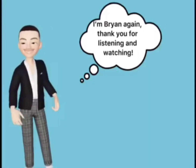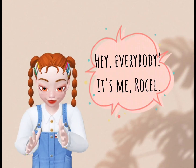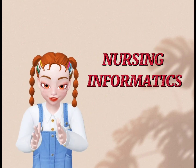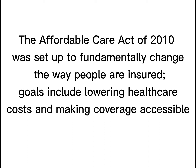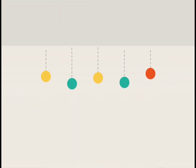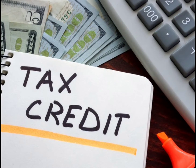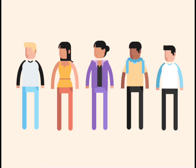Thank you for listening and watching. Hey everybody, it's me, Roselle. Let's talk about four more laws that guide nursing informatics. First, the Affordable Care Act. The Affordable Care Act of 2010 was set up to fundamentally change the way people are insured. Goals include lowering health care costs and making coverage accessible to previously uninsured people. The Affordable Care Act is formally known as the Patient Protection and Affordable Care Act, and commonly known as Obamacare. It was enacted to ensure that all have access to affordable health insurance, by offering consumer discounts or tax credits on government-sponsored health insurance plans, and by expanding the Medicaid assistance program to include more people who don't have it in their budgets to pay for health care.